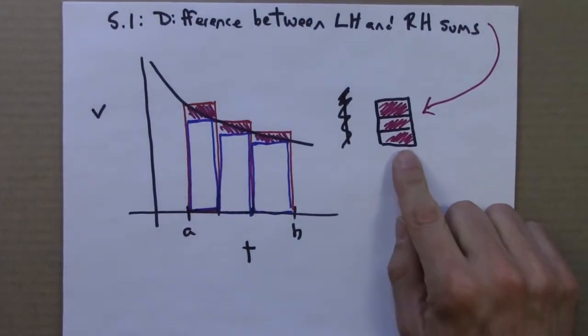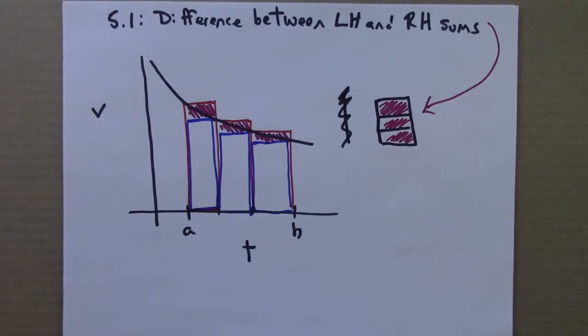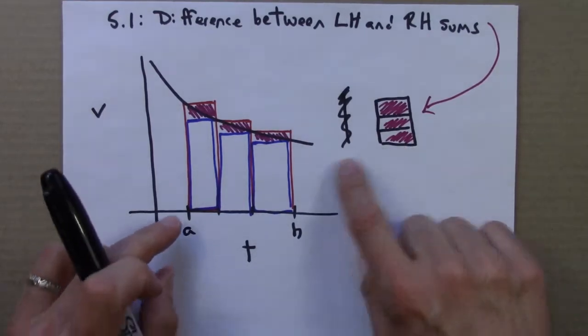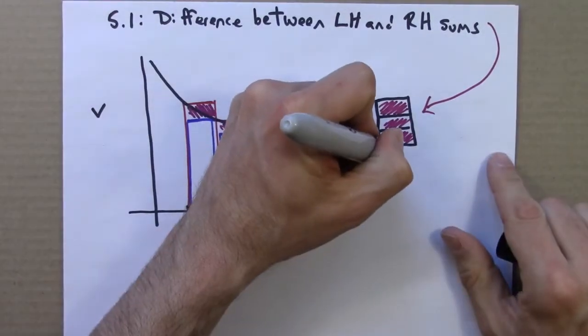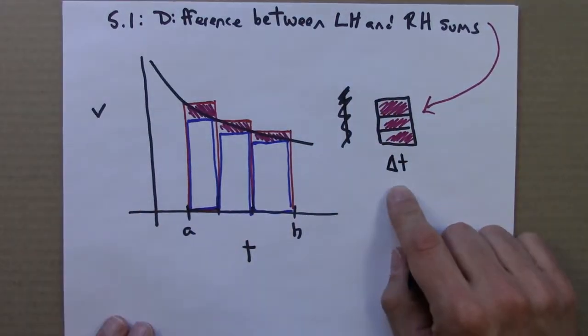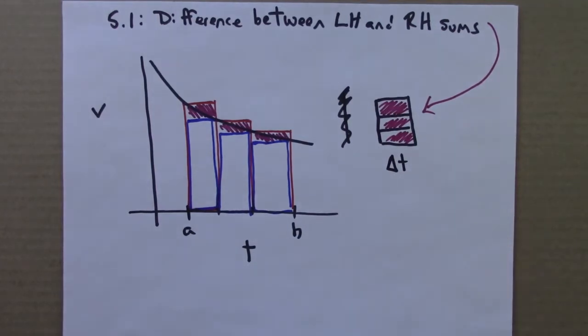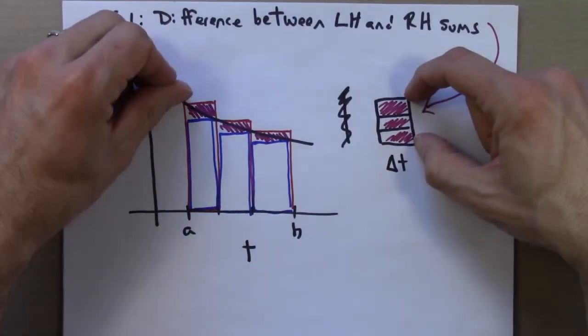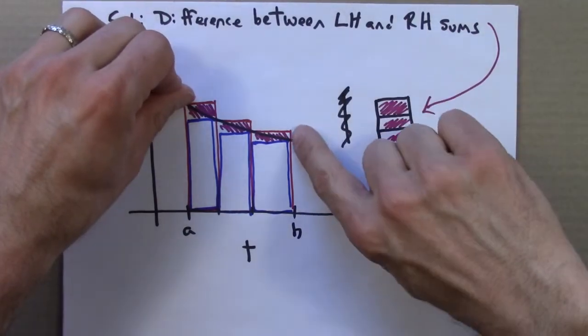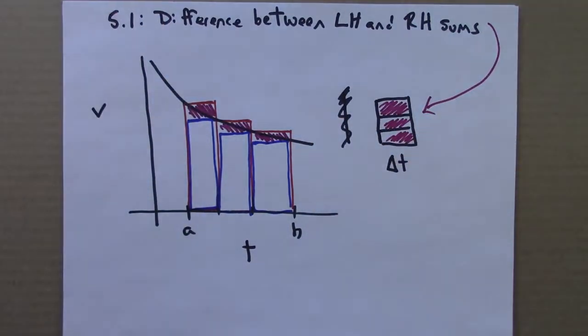And we can just geometrically write down a formula for this. The base of this rectangle is just delta t. And delta t, that's our little time interval over which we tell a lie, over which we're telling the lie that the speed is constant. This height here for this rectangle is initial velocity minus final velocity. So I'll write that here.